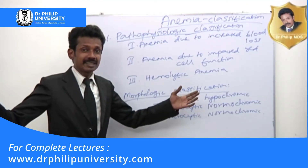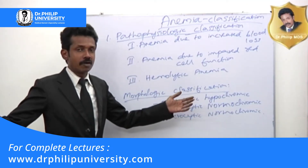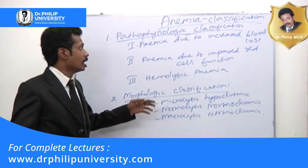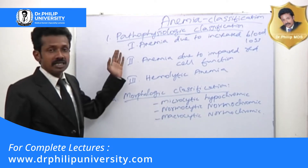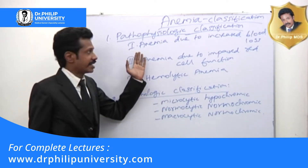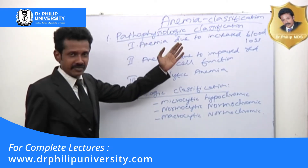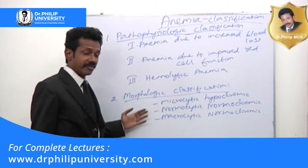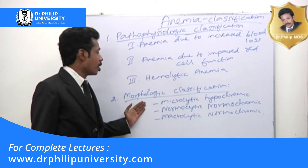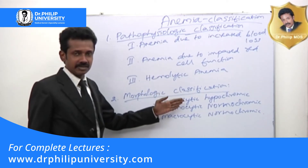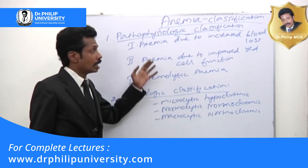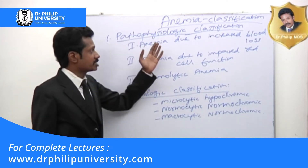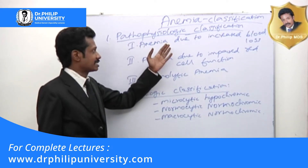We are going to see about the classification of anemia. In two ways we can classify anemia basically. The first way of classification is the pathophysiology classification of anemia, and the second way of classifying anemia is the morphology classification.